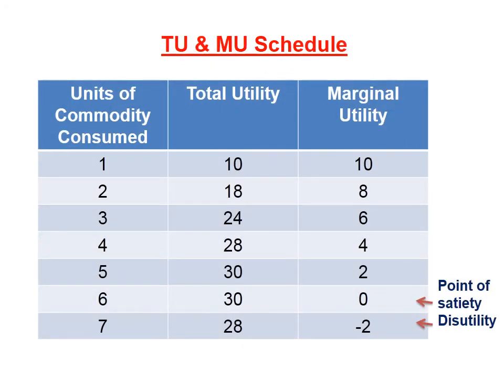Now let us see the relationship between total utility and marginal utility with the help of a schedule. In this schedule, three columns are given. In the first column, units of commodity consumed by the consumer are given — a total of 7 units. In the second column, total utility is given, and in the third column, marginal utility is given.